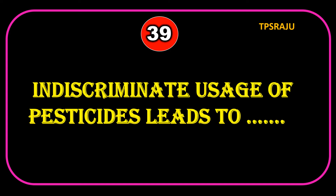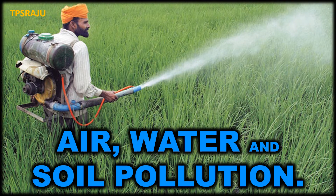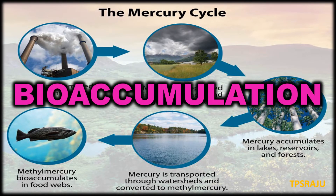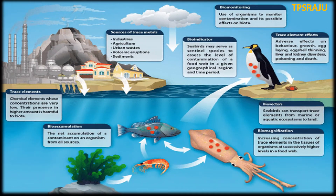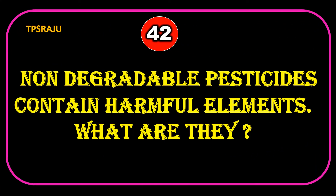Indiscriminate usage of pesticides leads to air, water, and soil pollution. The process of entering pollutants in the food chain is called bioaccumulation. The tendency of pollutants to concentrate as they move from one trophic level to the next is called biomagnification.